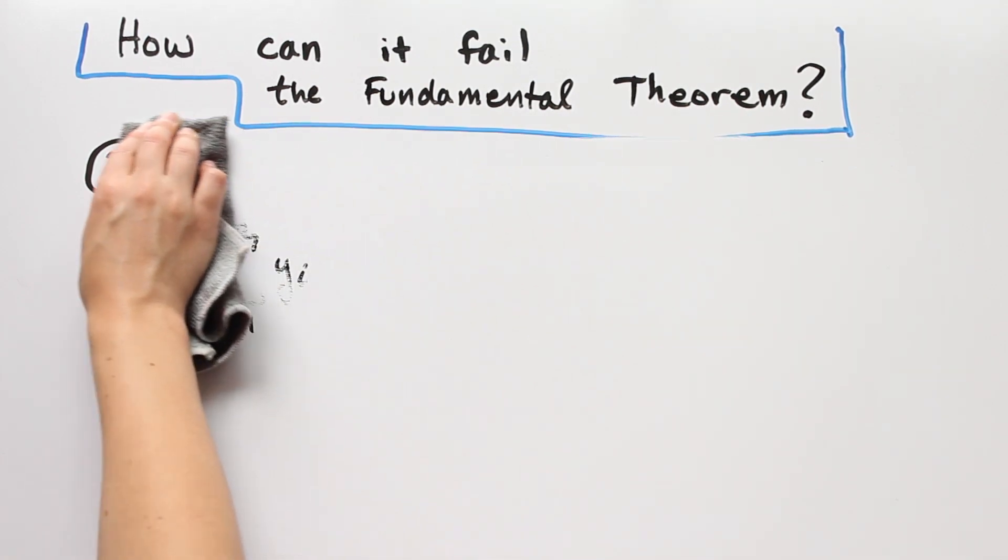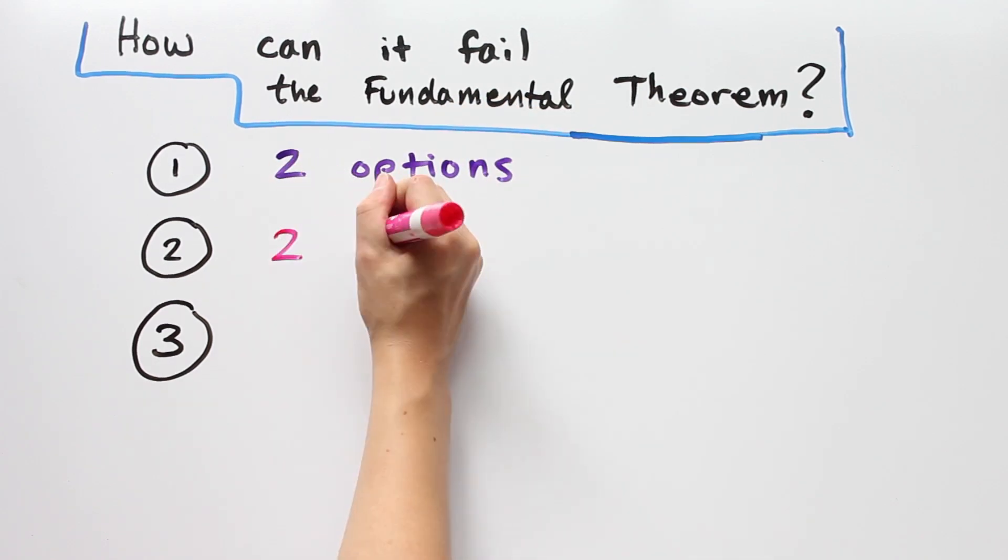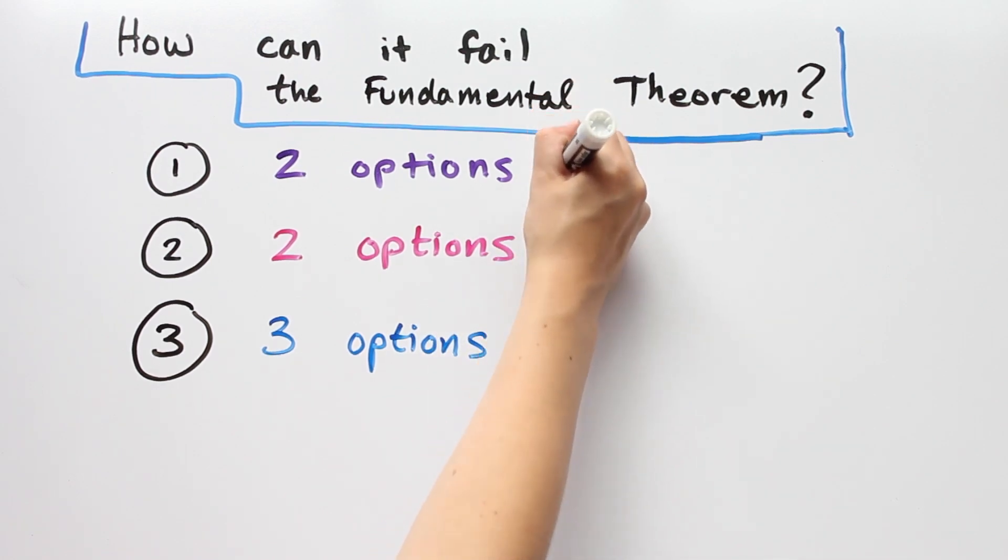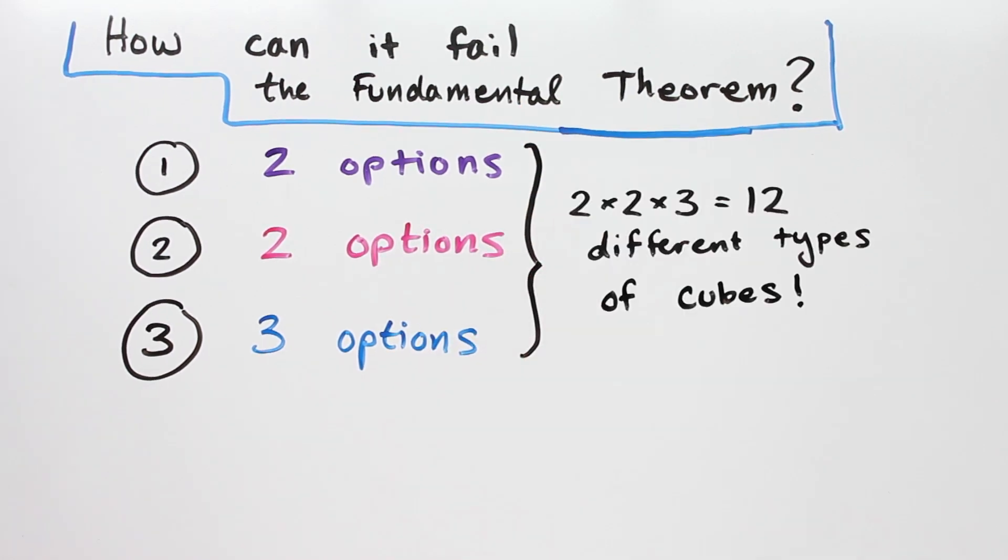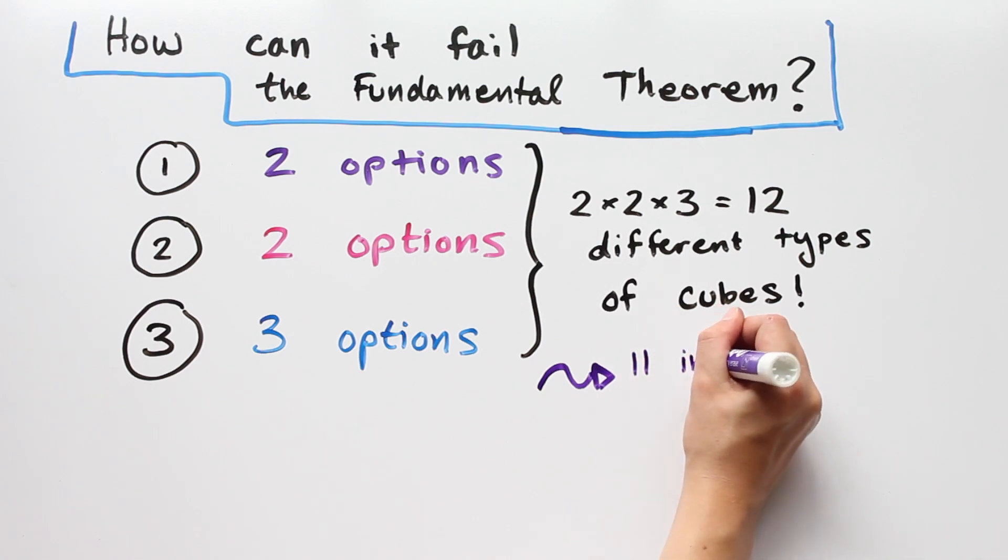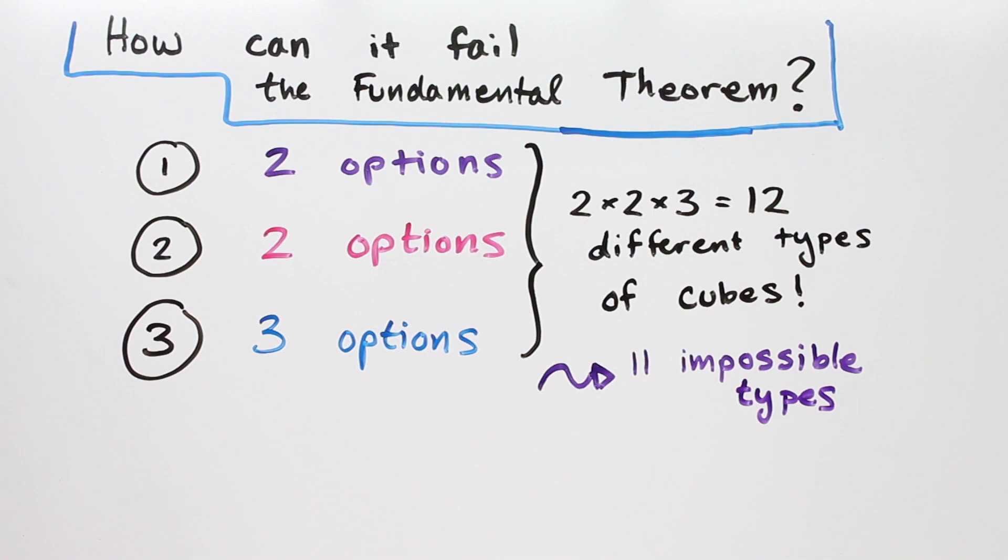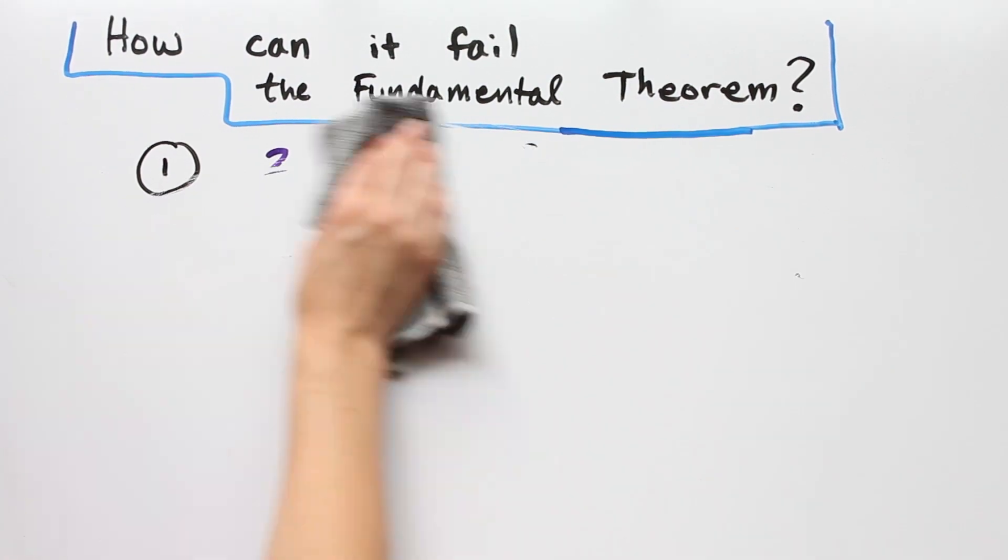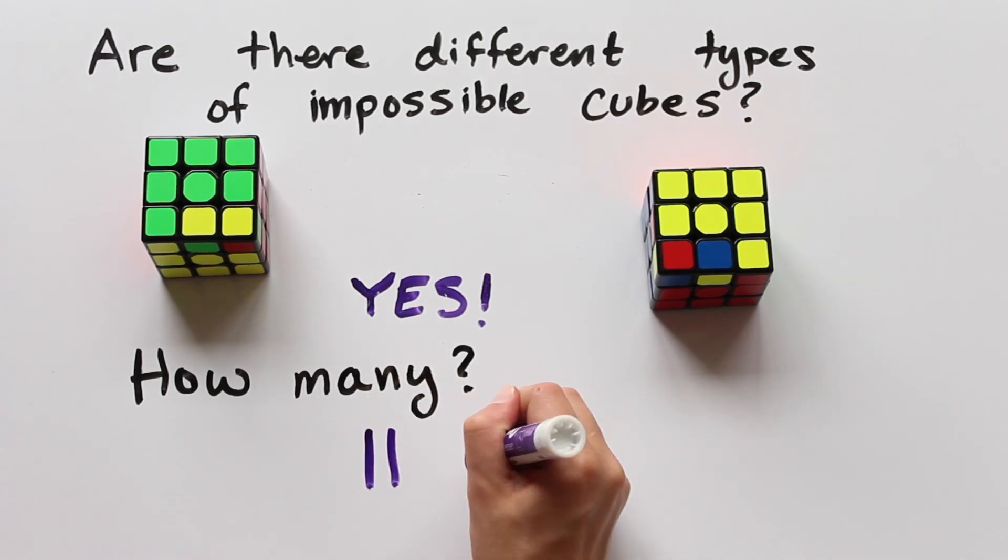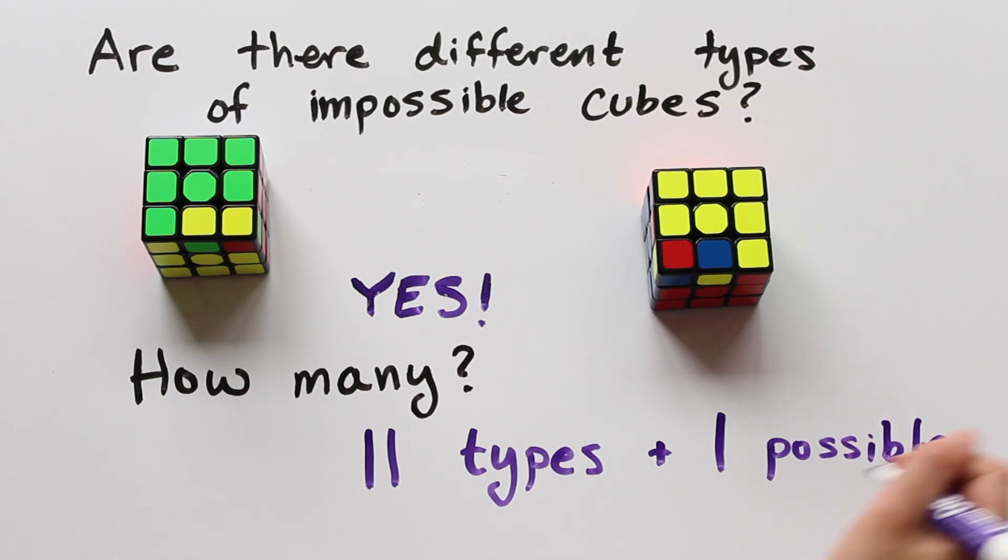Now let's combine all of this information. The first condition gives two options, the second condition also gives two, and the third condition gives three options. Thus for any cube arrangement we have 2 times 2 times 3 different choices. This gives 12 different types of cubes. Exactly one choice satisfies all of the conditions of the fundamental theorem of cubology, so there are 11 types of impossible cubes. So here we have an answer to our question: there are 11 distinct types of impossible cubes.